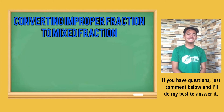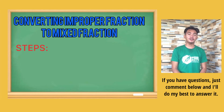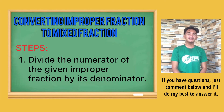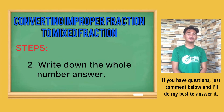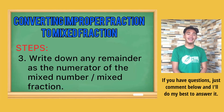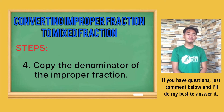Let's summarize the steps. When converting an improper fraction to a mixed fraction: first, divide the numerator of the improper fraction by its denominator. Second, write down the whole number answer (the quotient). Third, write down any remainder as the numerator of the mixed number, then copy the denominator of the improper fraction.